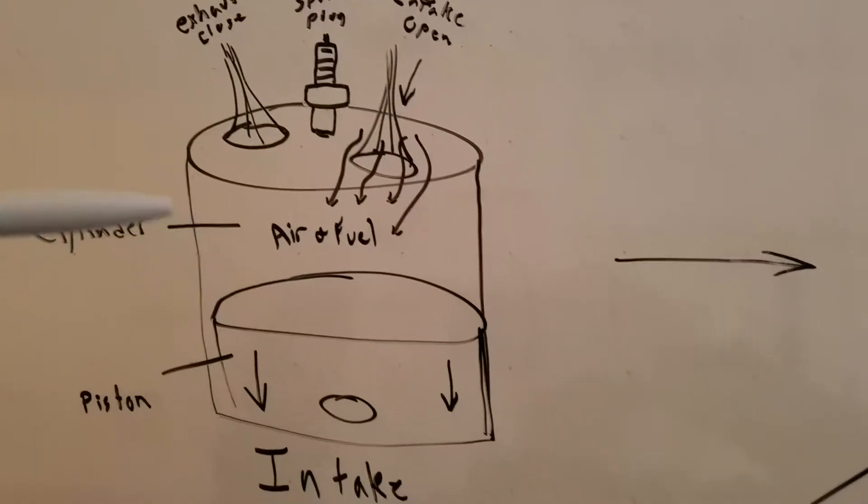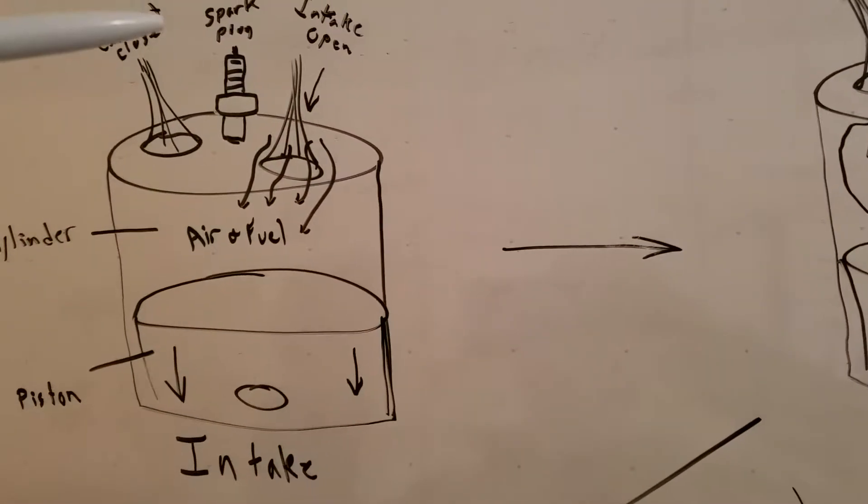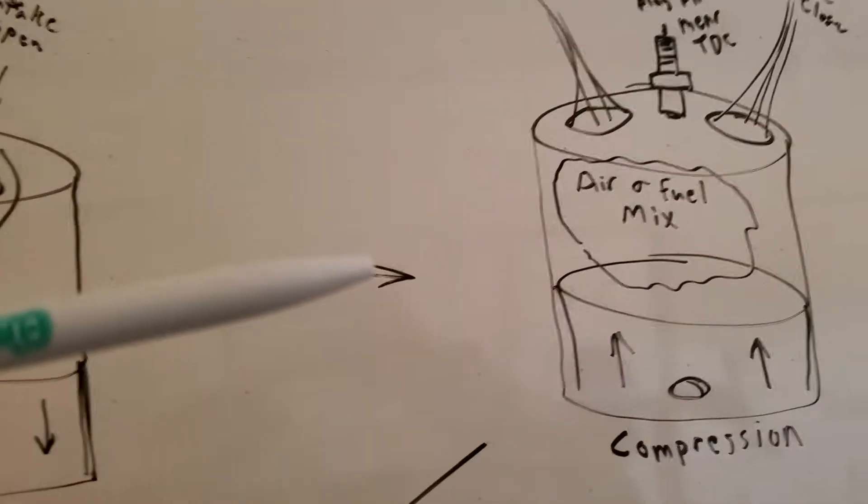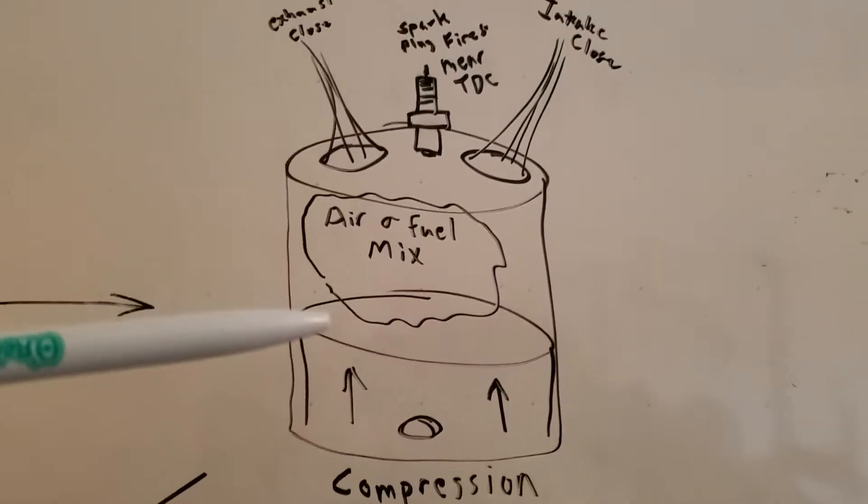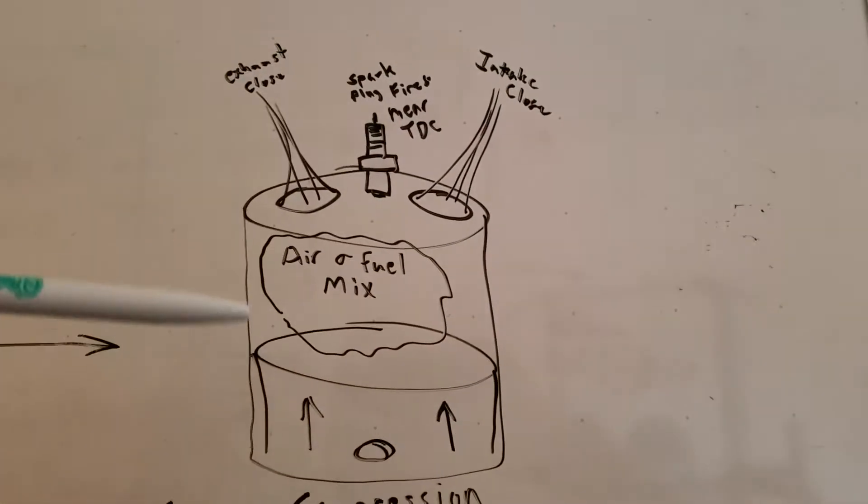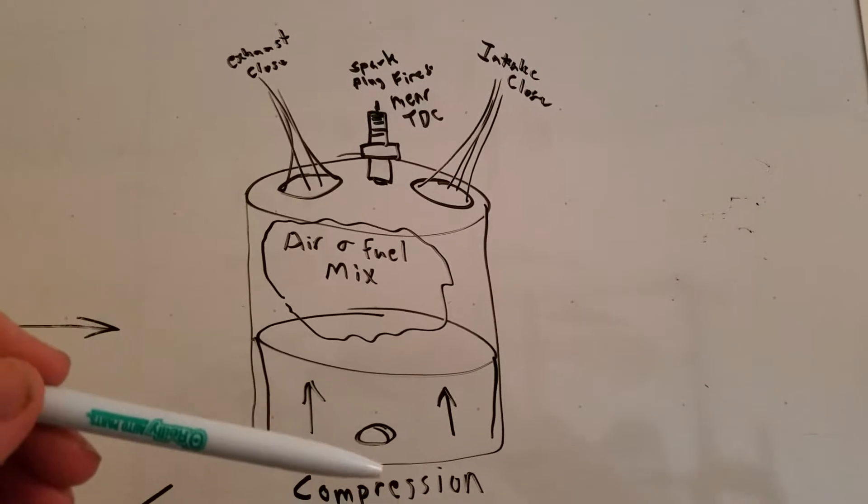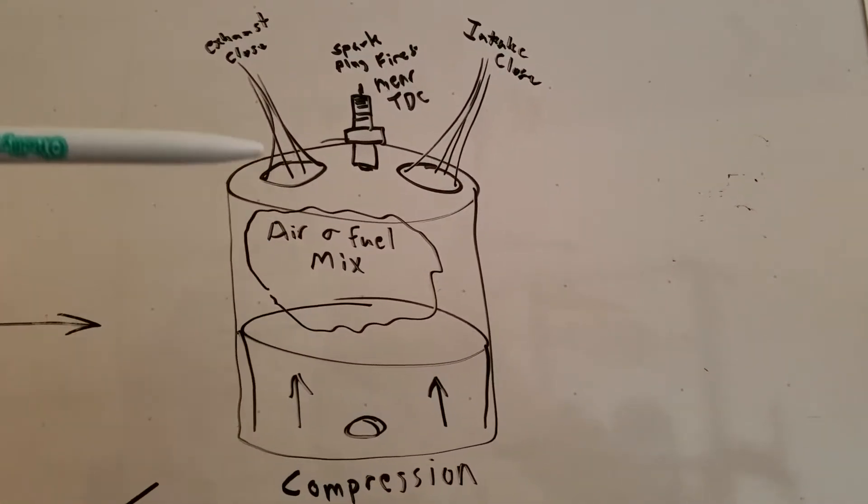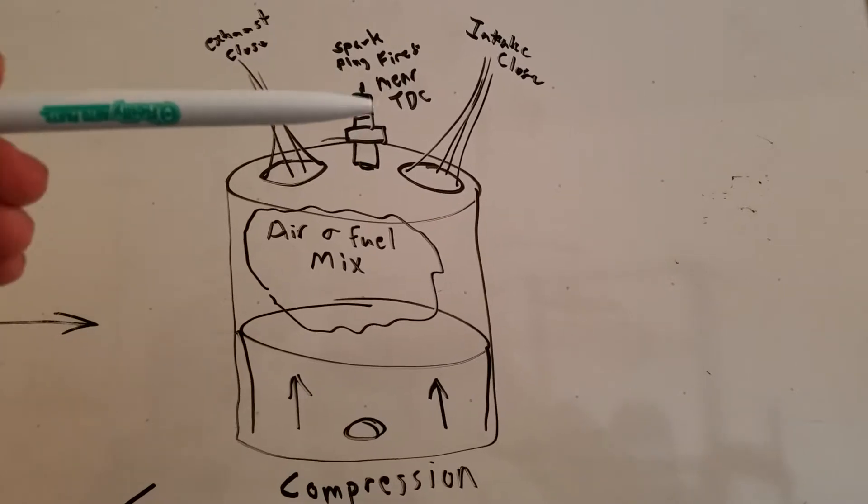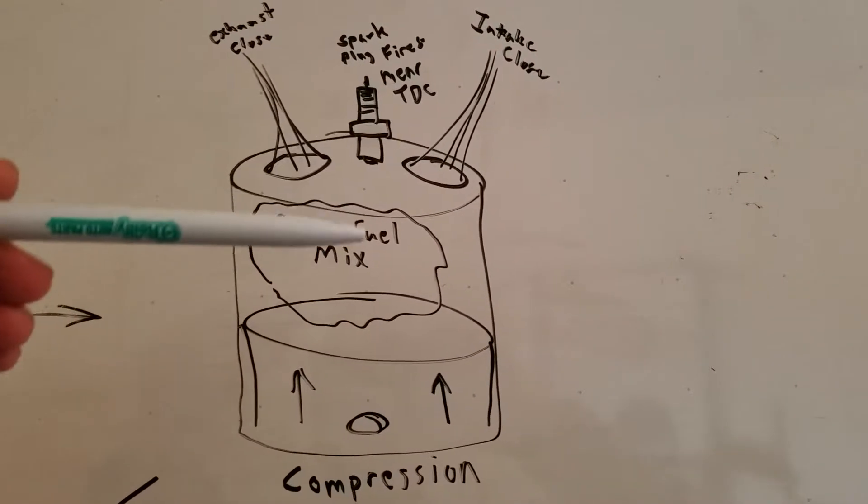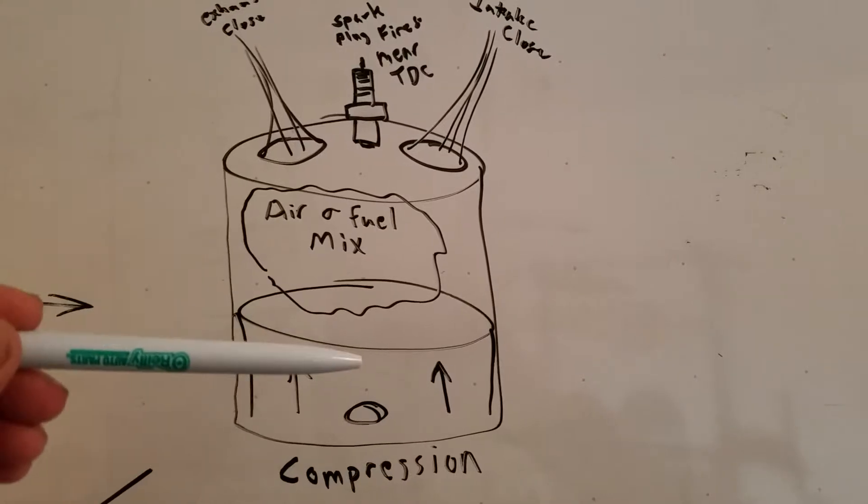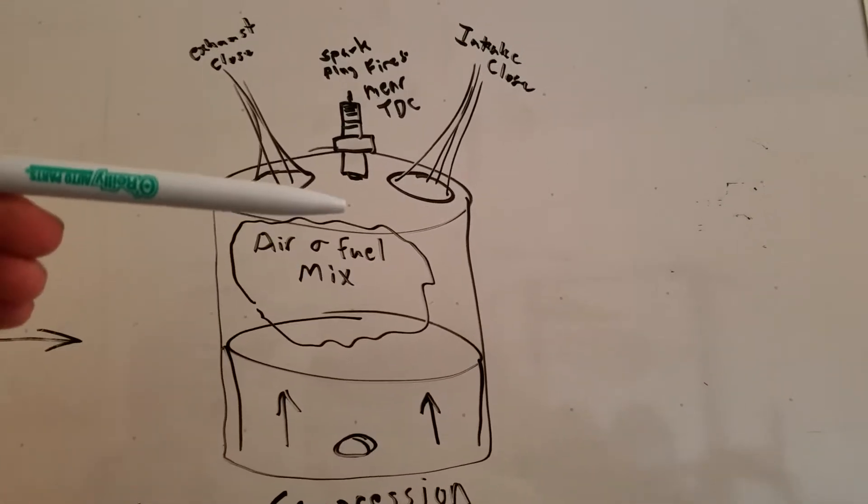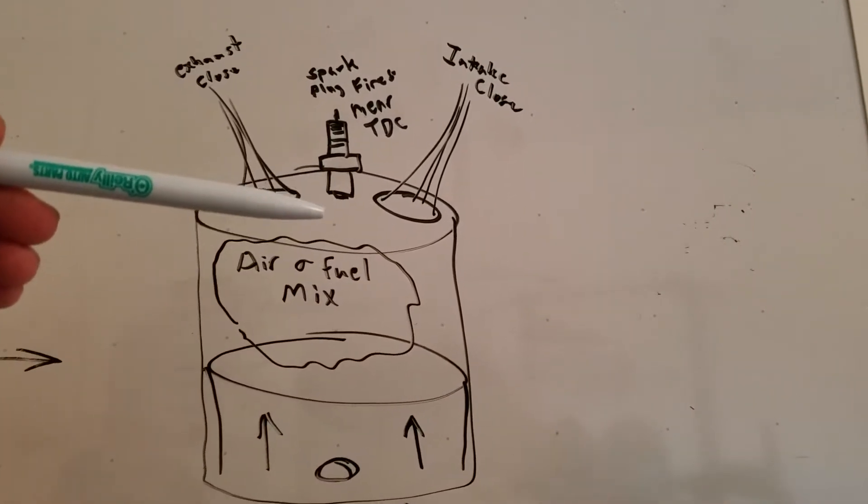Coming over to the next is going to be your compression. Basically, the piston's at the bottom and it starts to come up. Your exhaust valve is closed, the intake valve is closed, and your air fuel mix is right here. It begins to get compressed. Now when this nears up here at the top toward top dead center, the spark plug's going to fire.